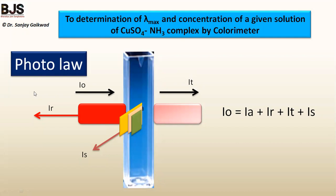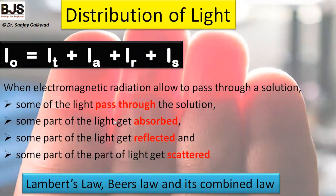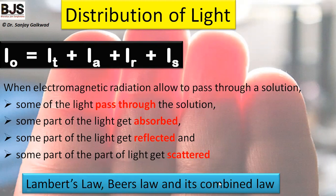When monochromatic light is allowed to pass through a clear colored solution, the intensity of incident light equals the intensity of absorbed light plus intensity of reflected light plus intensity of transmitted light plus intensity of scattered light. Of these photo laws, the two most important are Lambert's law, Beer's law, and their combined law.